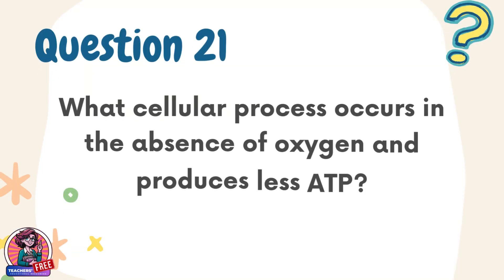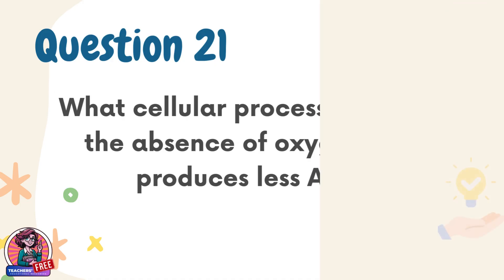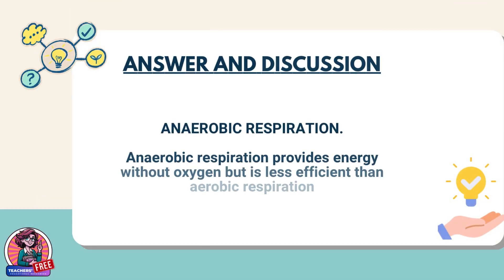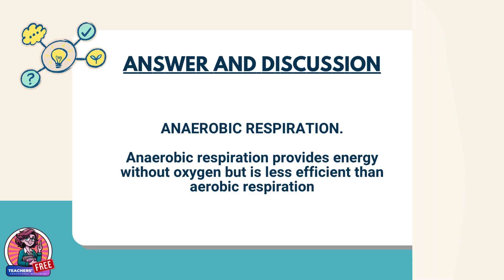Question 21. What cellular process occurs in the absence of oxygen and produces less ATP? Answer: Anaerobic respiration. Anaerobic respiration provides energy without oxygen but is less efficient than aerobic respiration.